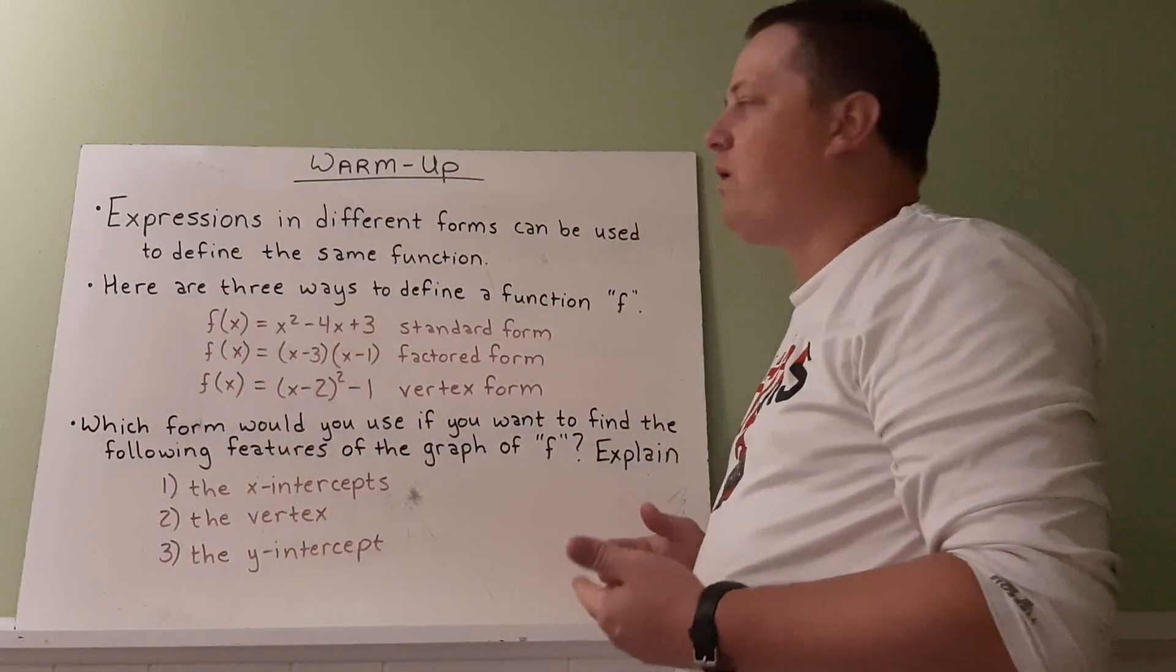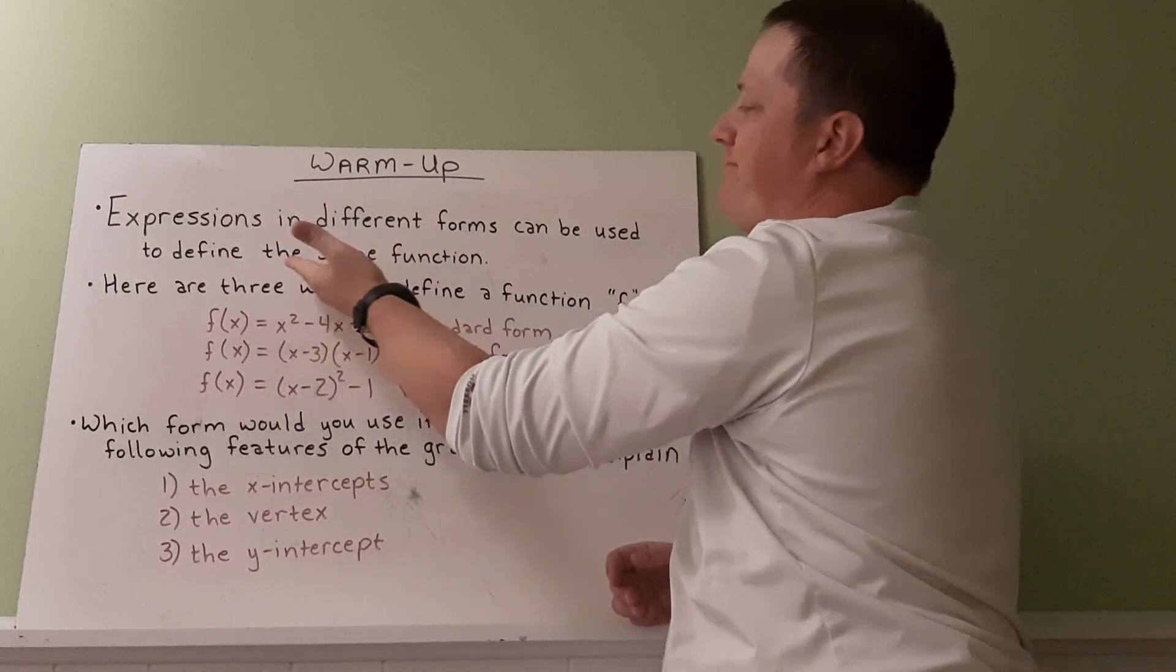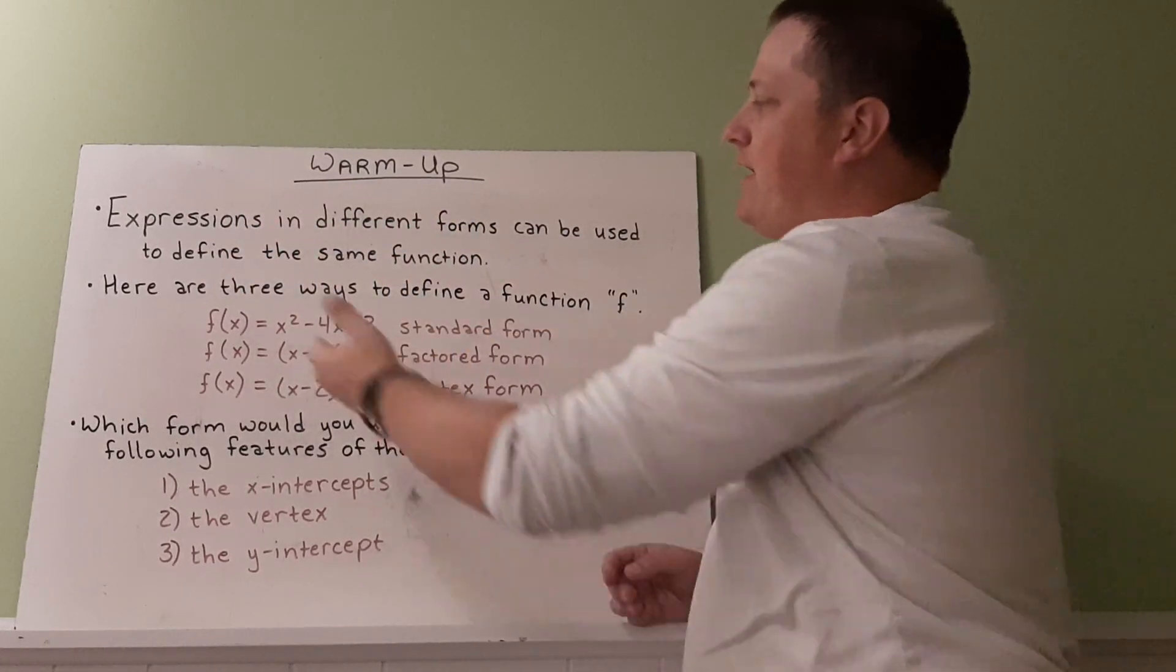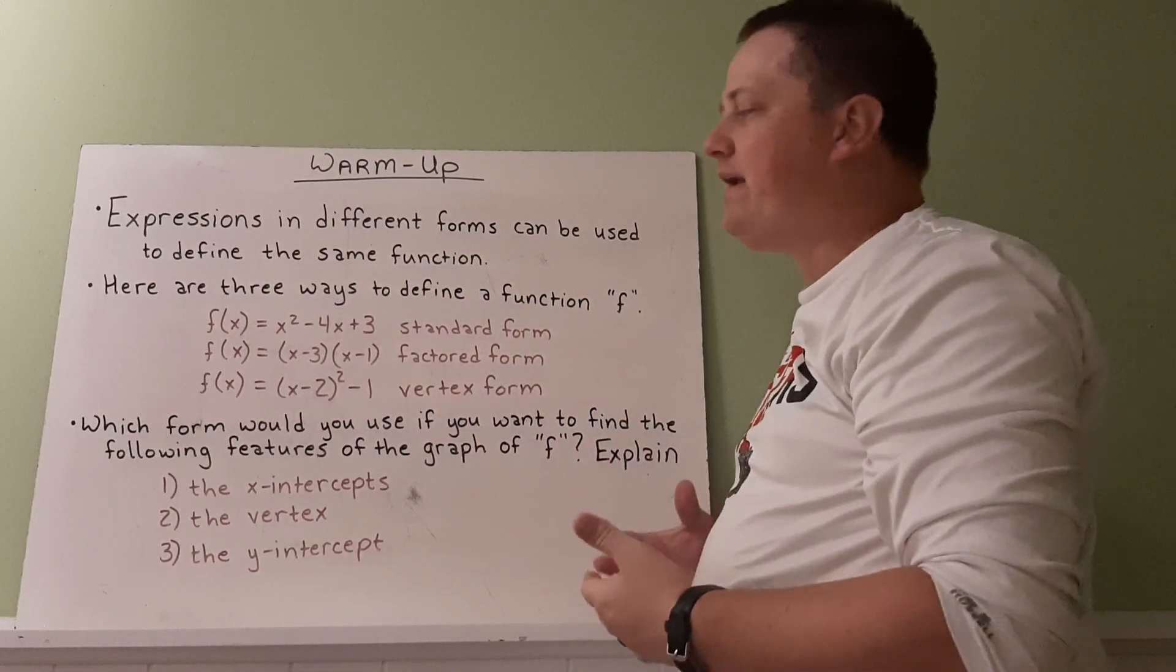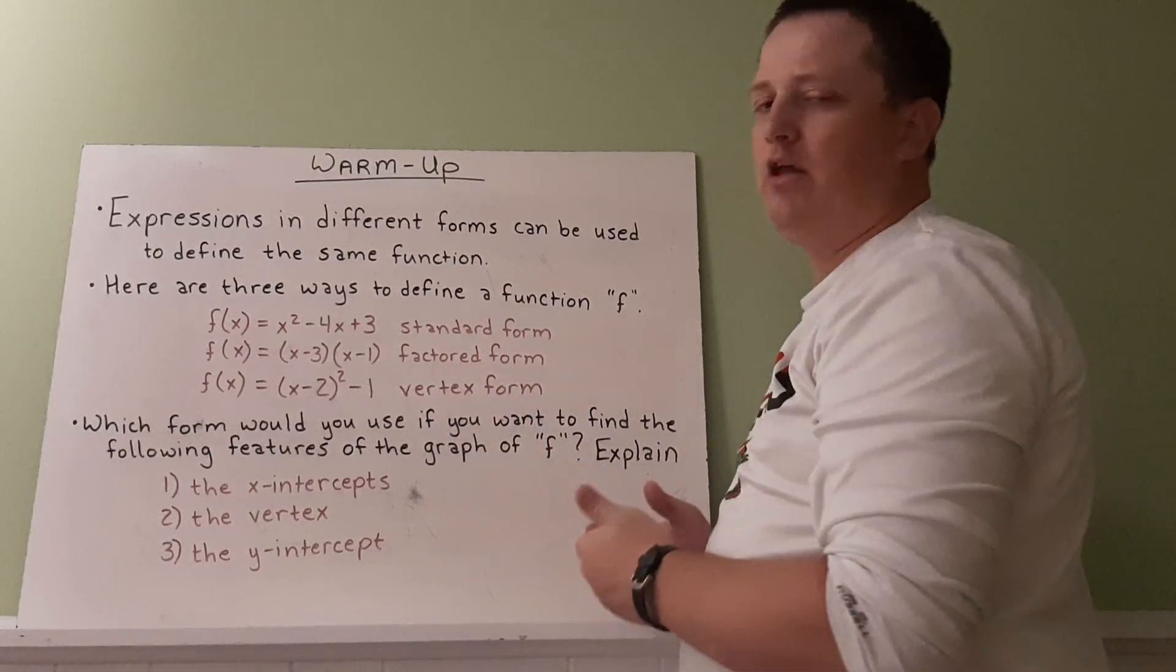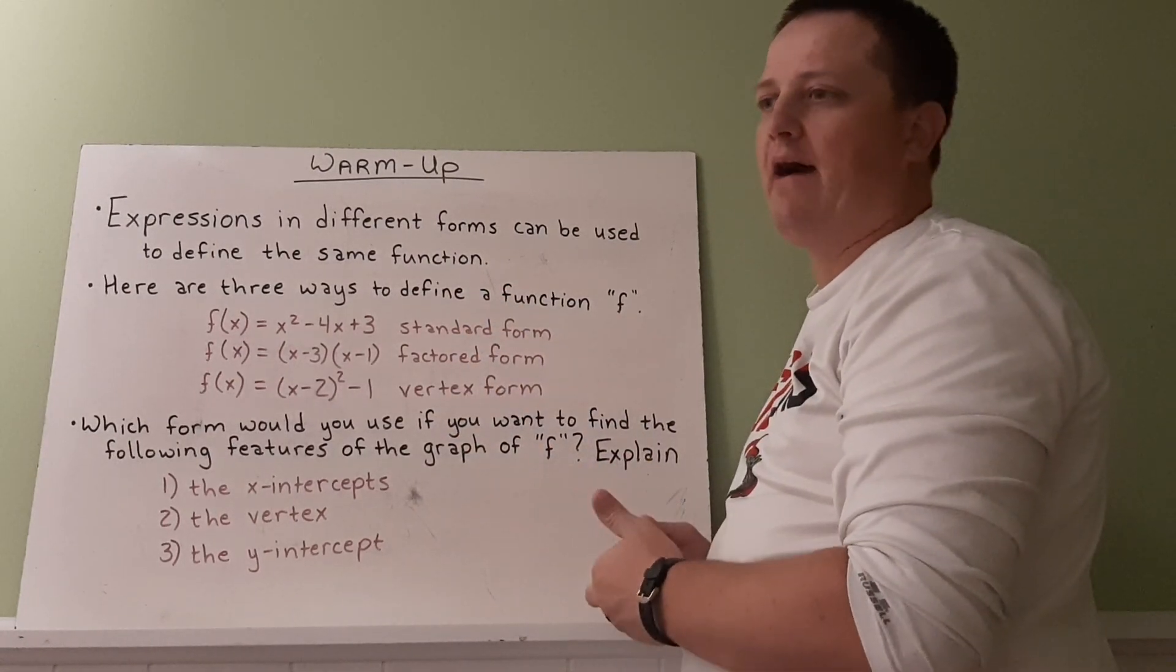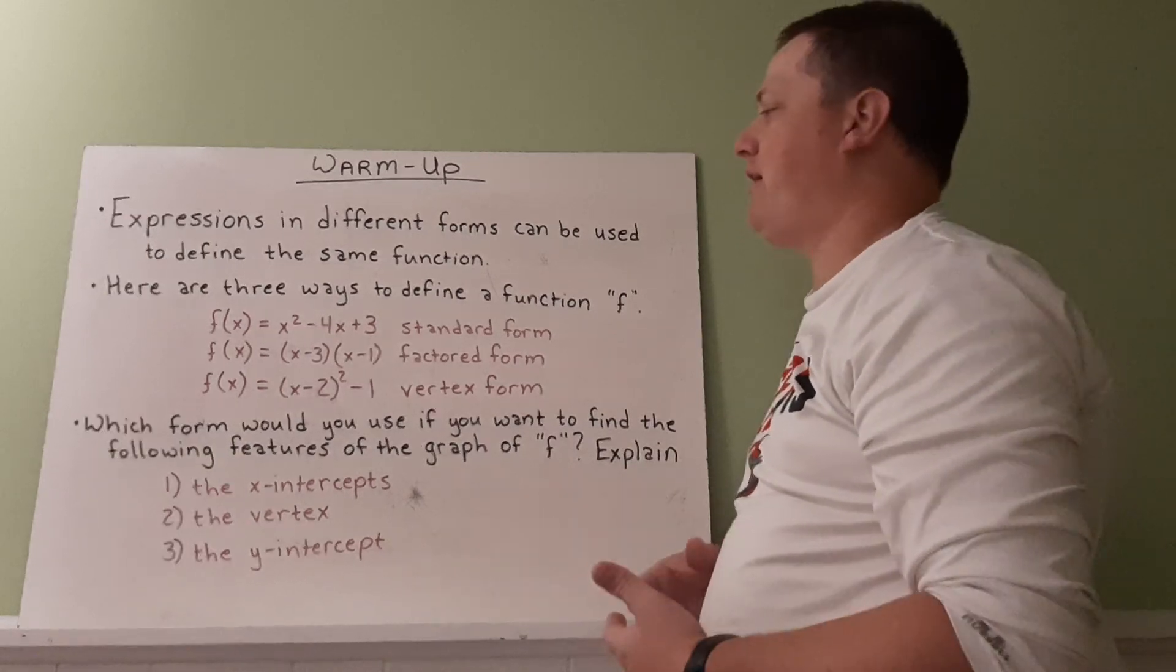Alright, so our warm-up is: expressions in different forms can be used to define the same function. Here are three ways to define a function f. So I have three forms of function f: standard form, factored form, and vertex form. All of these would give the exact same graph, but each one highlights a different feature of the graph.